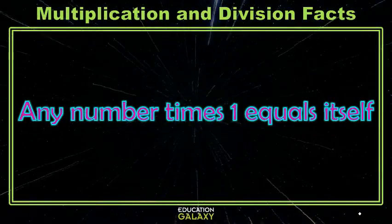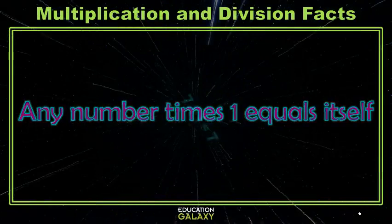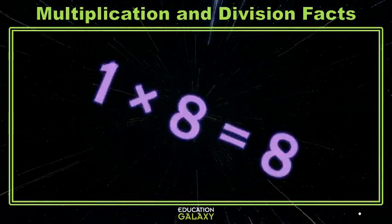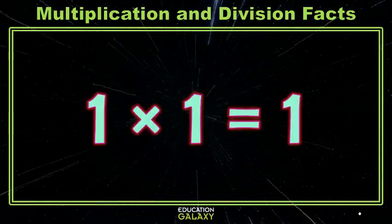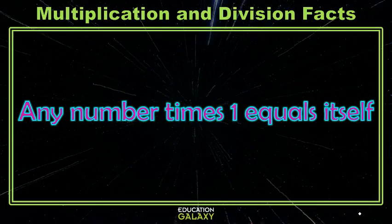What about the number 1? Any number times 1 is itself, so 7 times 1 is 7, 1 times 8 is 8, even 1 times 1 is 1 because any number times 1 is itself.